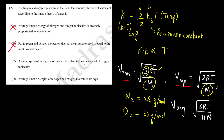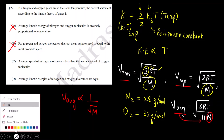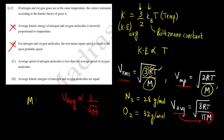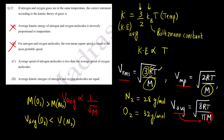Option C: the average speed of nitrogen molecules is less than the average speed of oxygen molecules. V_average is inversely proportional to the square root of molar mass M. The molar mass of oxygen is greater than that of nitrogen, so the average speed of oxygen is less than that of nitrogen — not the other way around. The option states nitrogen's average speed is less, which is incorrect. Therefore, option C is incorrect.